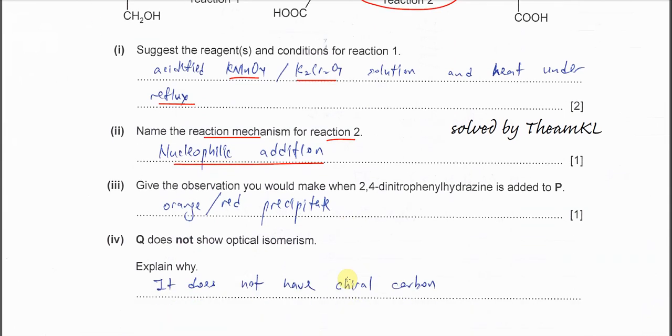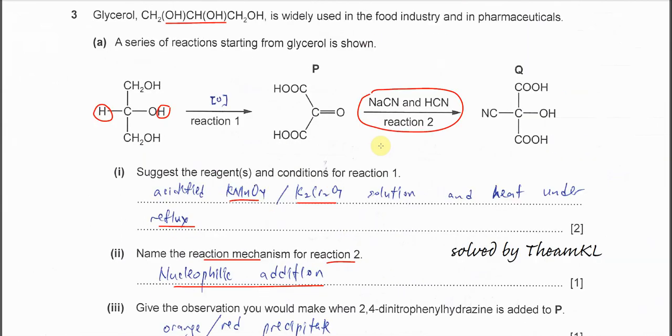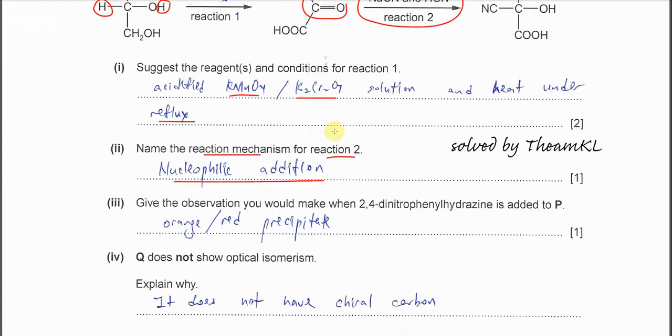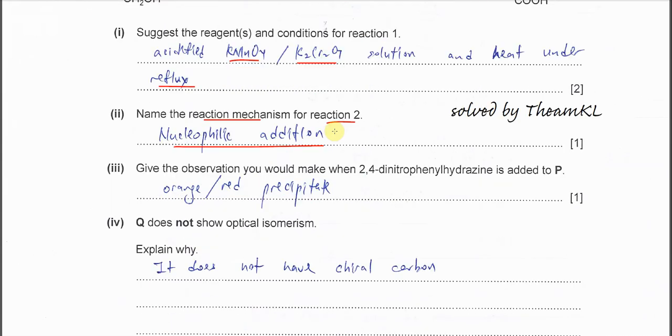Part 3: Give the observation that you would make when 2,4-DNPH is added to P. P has a carbonyl group, so it will form orange precipitate with 2,4-DNPH. Orange or red precipitate.